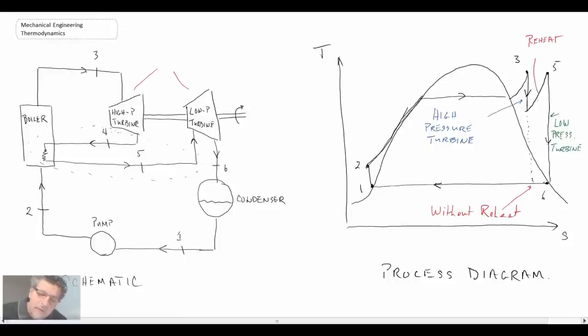And then in terms of the diagram, the changes are this reheat section here where we expand partially in our high pressure turbine. We reheat and then go back up to a high temperature and expand again. And the advantage of doing this, had we expanded directly from three down, we would have ended up in the two phase region. We would have had a lot of water droplets in our fluid coming out of the turbine.